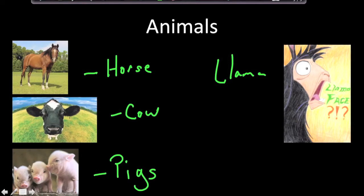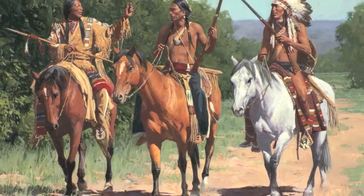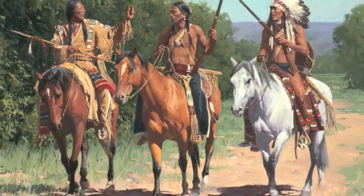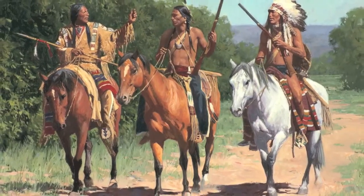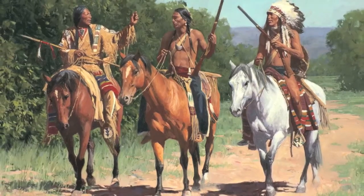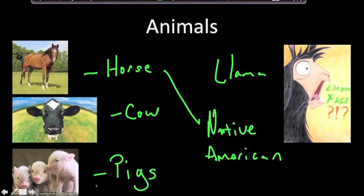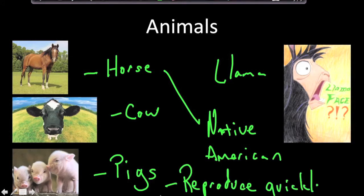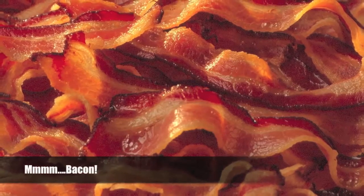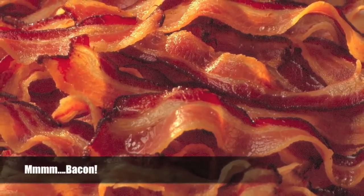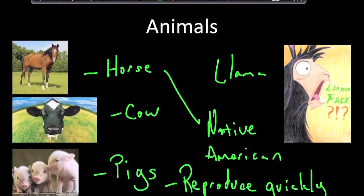The horse was vital to Native American culture — Indians quickly became expert horsemen, became nomadic, and started hunting buffalo. Cows provided milk, and pigs reproduce quickly and became a great food source in the Americas. Oxen and other beasts of burden also went from the Old World to the New World, which was a great benefit.